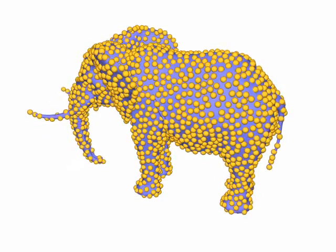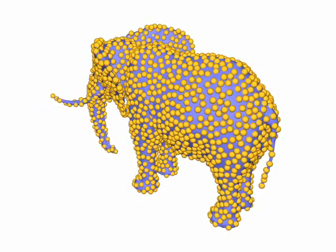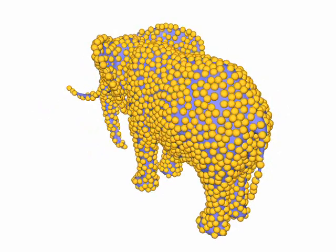Poisson disk distributions exhibit neither oversampling nor undersampling. Note that in this example the small spheres do not overlap, and the large spheres completely cover the surface.